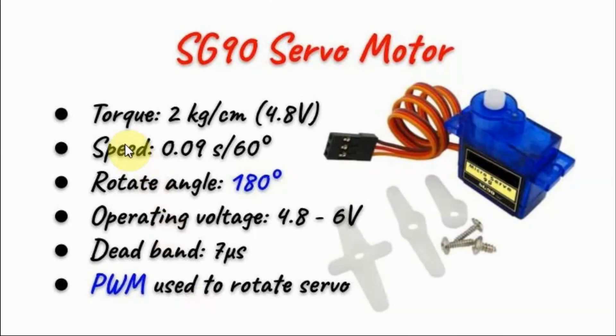The main specs of the SG90: it has a torque of 2 kg per centimeter at nominal voltage. The speed of rotation is 0.09 seconds per 60 degrees. It has a rotational angle of 180 degrees, 90 degrees in clockwise and 90 degrees in counterclockwise. The operating voltage is between 4.8 to maximum 6 volt and it has a dead bandwidth of 7 microseconds which is the permissible change in the bandwidth without affecting the rotation of the servo motor.